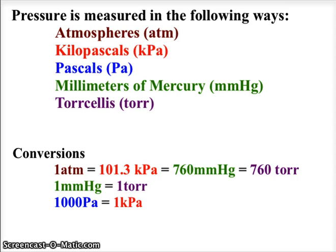One of the first things we deal with in the gas laws is pressure, which we looked at when we discussed the kinetic molecular theory. Because the molecules are in motion, they are colliding with the surfaces of the container the gas is housed in, and with each other. It is the number of collisions and the number of molecules involved that create the pressure a gas is under. Unfortunately, in different sciences — physics versus chemistry — we deal with different terms for pressure. Here are five of the possible terms we can use to measure pressure.